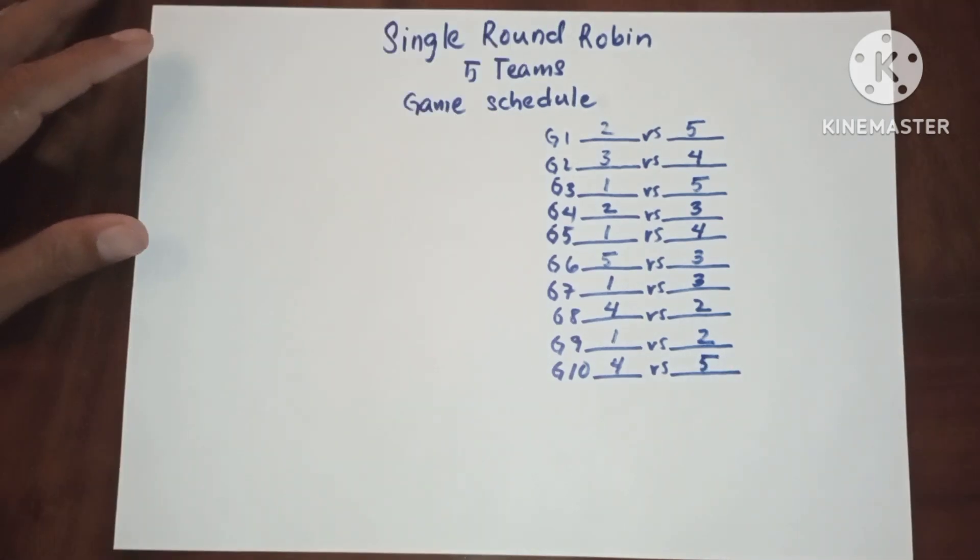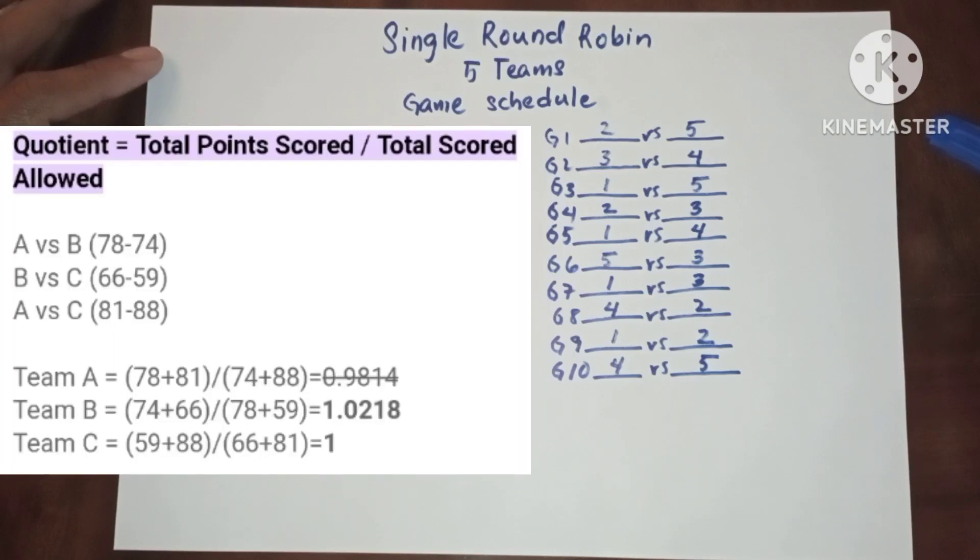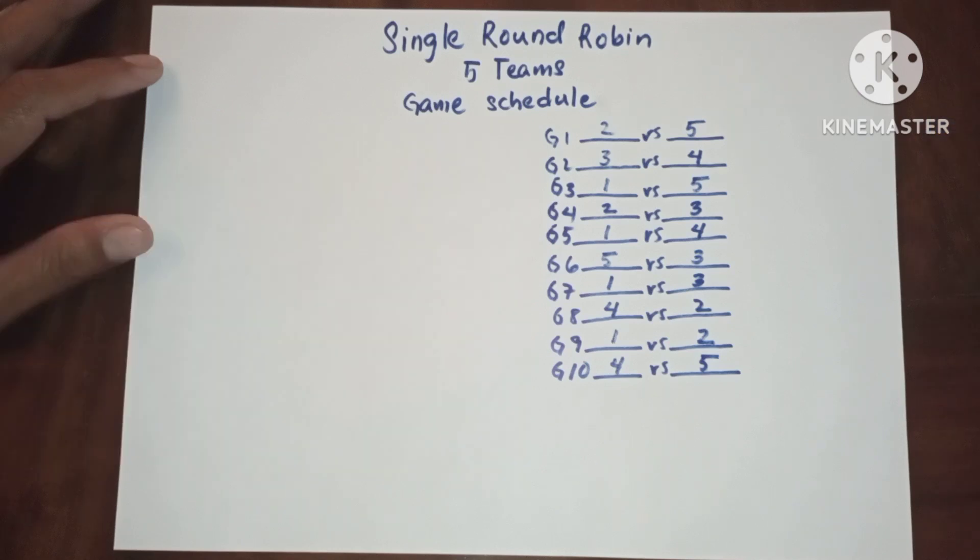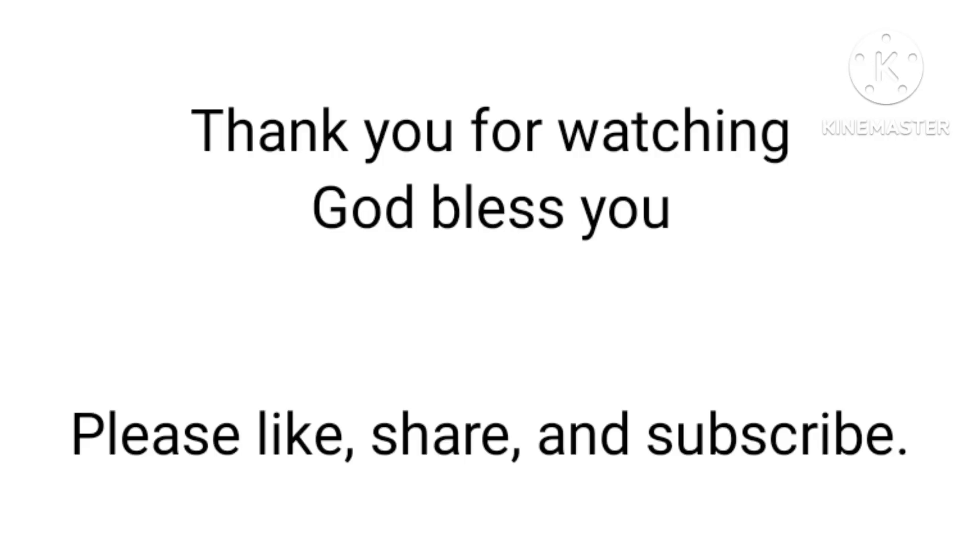So in round robin it is possible to have a tie. So in case of tie, win over the other. In case of triple tie, cushion. So this is the pairing and game schedule in single round robin for five teams.